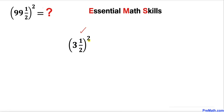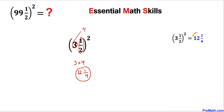Let's take care of this three and a half squared. We are going to multiply by four — three times four is twelve. And then we are going to take care of the square of one over two, which is going to become one over four. So our answer is going to be twelve and one fourth. In decimals, three point five squared equals twelve point two five.